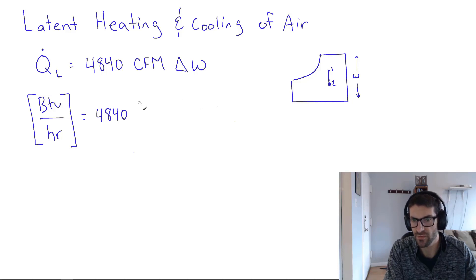And the CFM, the volume flow rate, has to be in CFM. That's implied. And the humidity ratio has to be in pounds of water or pounds of H2O, I'll write subscript W for that, but you can write H2O if you like, per pound of dry air.